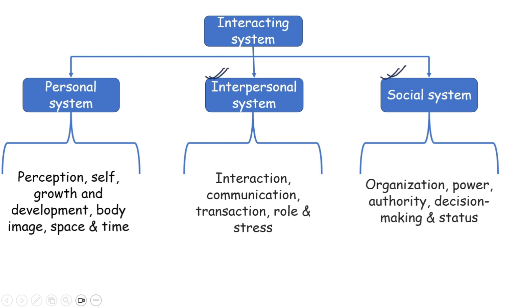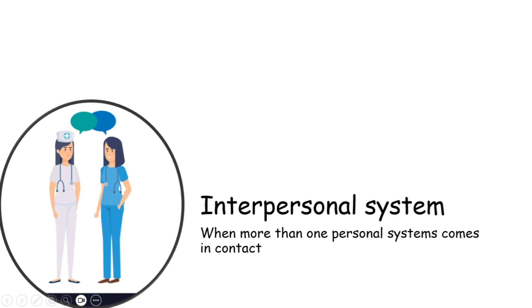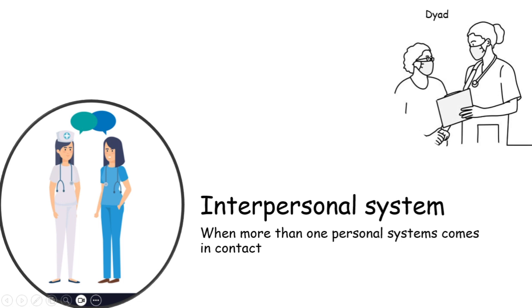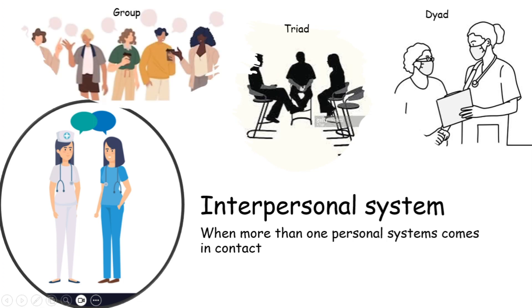Interpersonal means when more than one personal system comes in contact. When a nurse interacts with the patient, it becomes an interpersonal system. Not only nurse to patient, it can be patient to patient or nurse to nurse — it can contain even more than two persons. When two persons are interacting, it's called a dyad. When three persons are interacting, it's called a triad. When four or more are interacting among themselves, it's called a group.